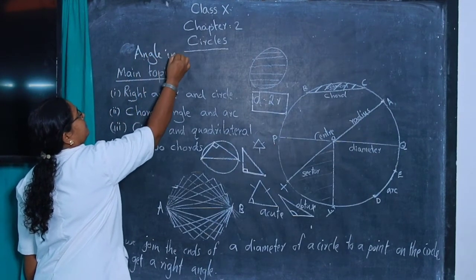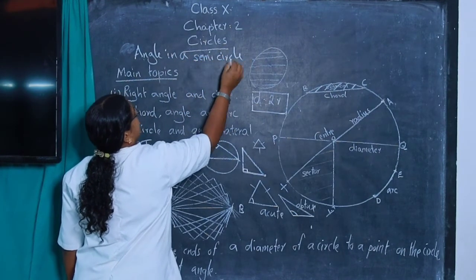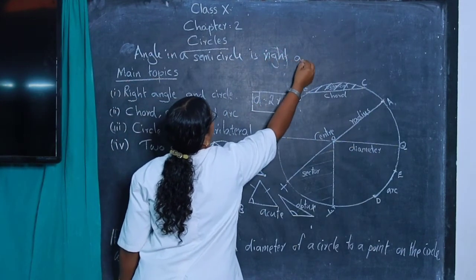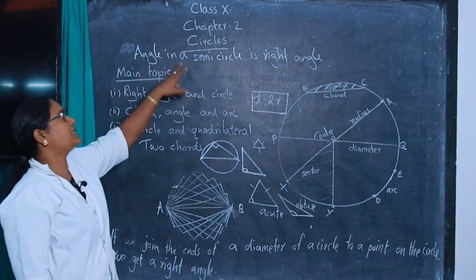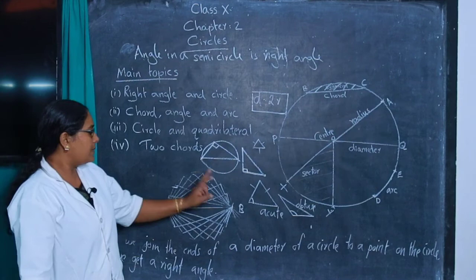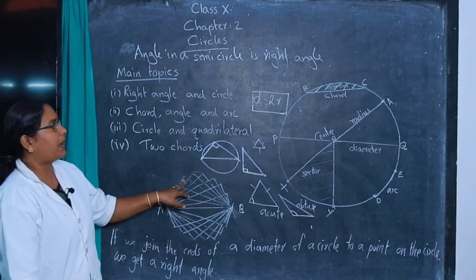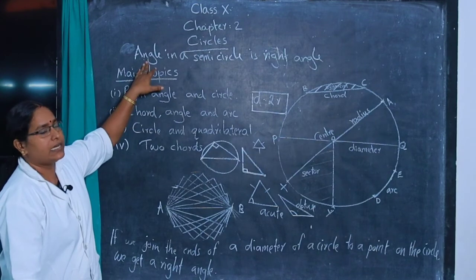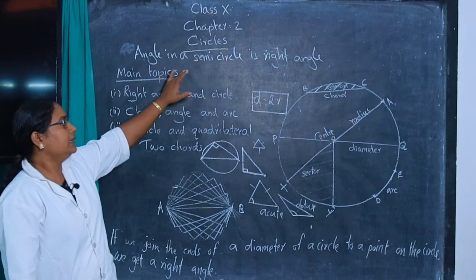Angle in a semicircle is a right angle, which is 90 degrees. All lines drawn from the ends of the diameter to any point on the circle are always perpendicular. This is the important statement: angle in a semicircle is a right angle. Drawing a line from the ends of a diameter to a point on the circle always makes 90 degrees.